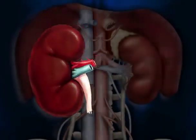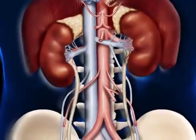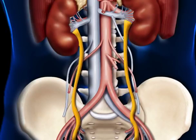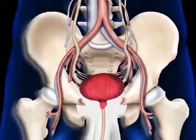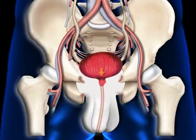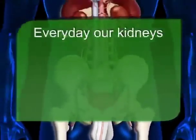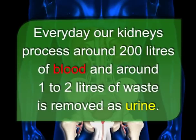Healthy kidneys act like a strong filter to make sure the right amount of wastes and fluids are removed from our body. As each kidney makes urine, the urine slides down through a long tube called the ureter. Ureters from both kidneys open into a storage sack known as the urinary bladder, where urine is stored until the bladder is emptied by urinating. The bladder is connected to another tube-like structure called the urethra for the removal of urine out of the body. Every day our kidneys process around 200 liters of blood, and around 1 to 2 liters of waste is removed as urine.